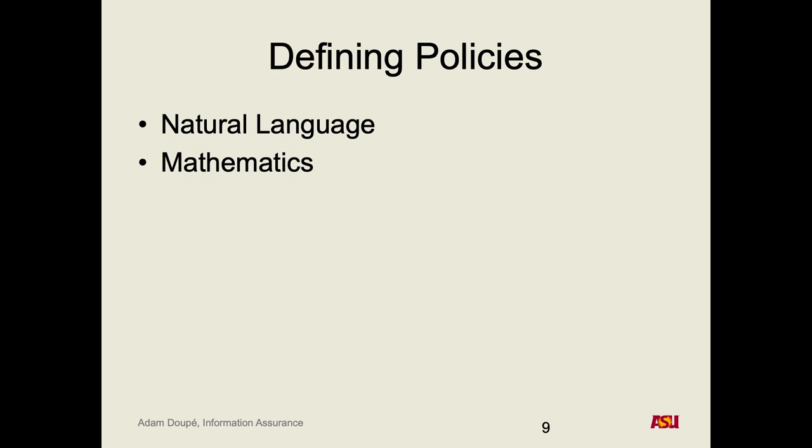A third option: you could write a reference implementation and say whatever that program does is the security policy. So if you have any questions, you just run a new simulation against that system. Ruby does this — the language doesn't have a formal specification; there's just the Ruby interpreter. Whatever that does is what Ruby does. Whereas other languages like C++ and Java have specifications for how they should work.